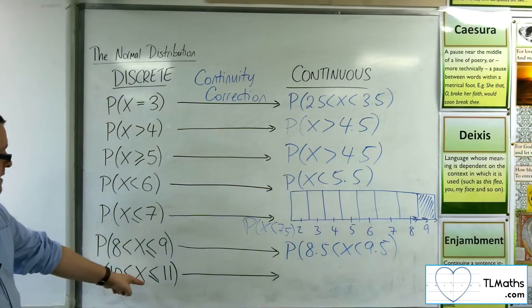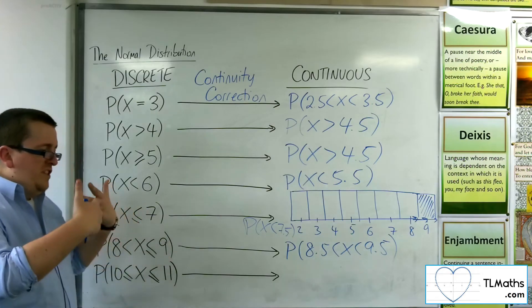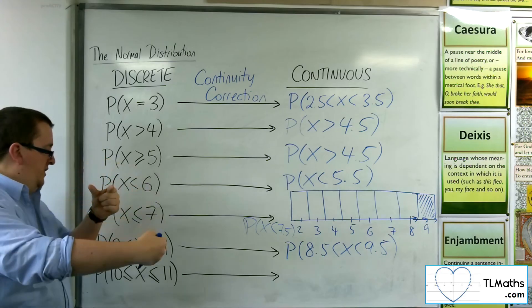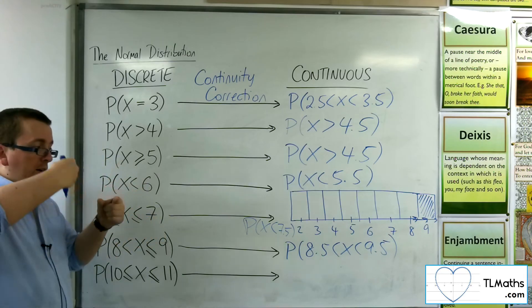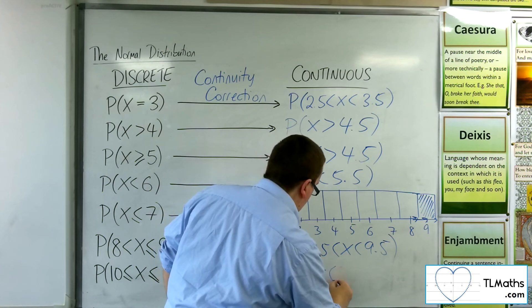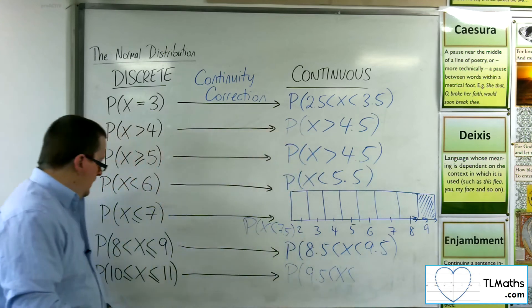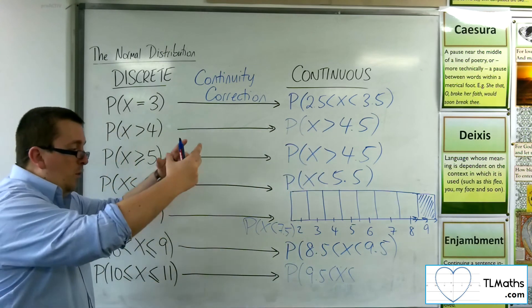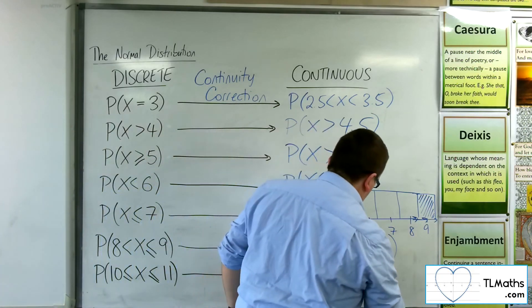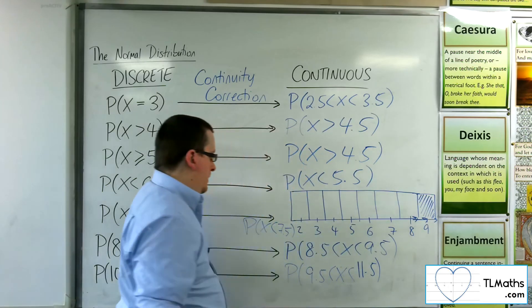For 10 to 11 inclusive. Imagine 10. That is a bar that goes from 9.5 to 10.5. I want that bar, so I'm going from 9.5 up to 11. But I want the bar of 11, which ends at 11.5.